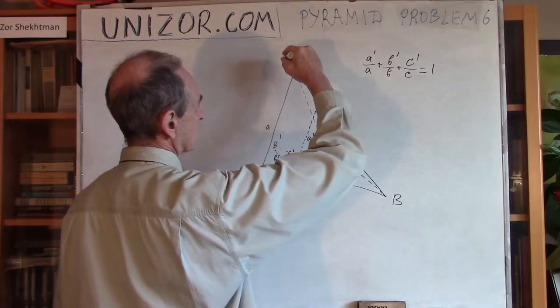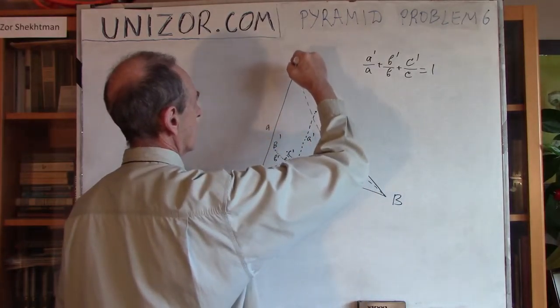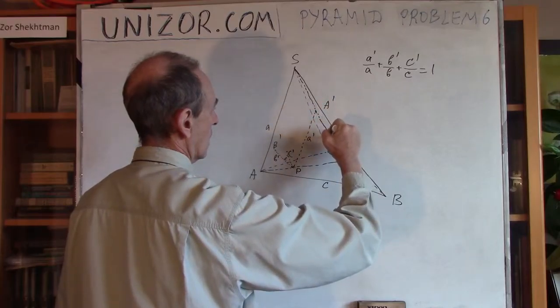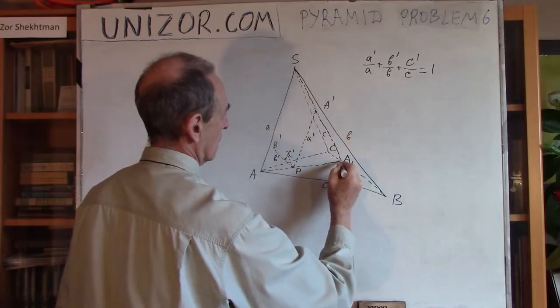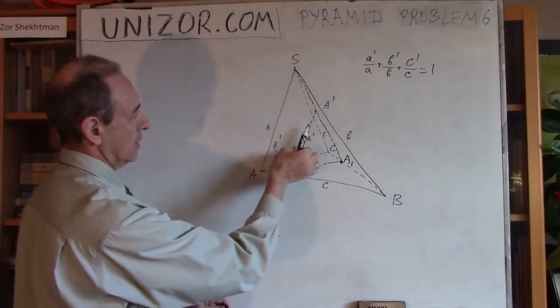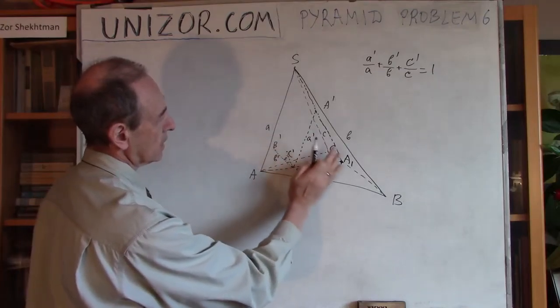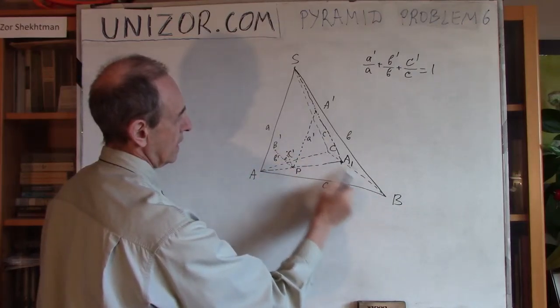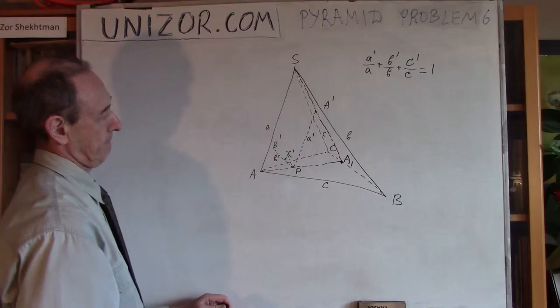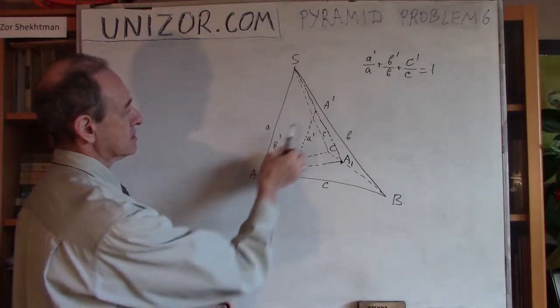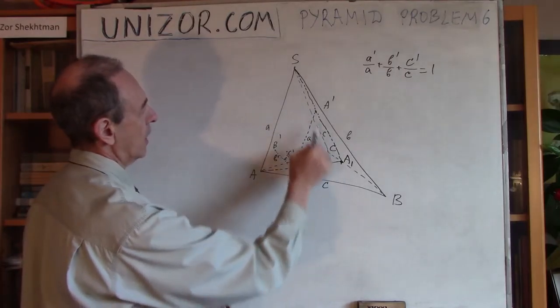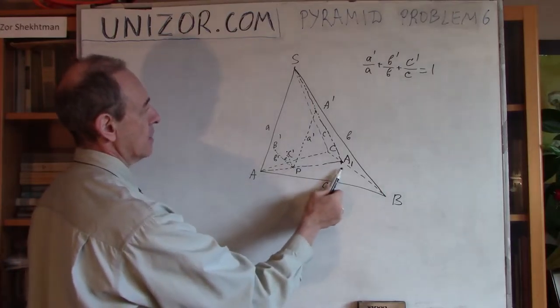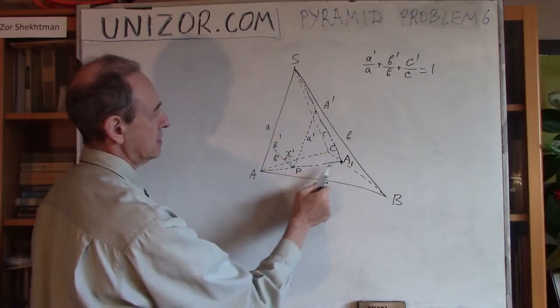And it will cut the opposite face SBC through some line. This is a plane which goes through parallel lines PA prime and SA, and it cuts through the pyramid two faces, and goes into point A1 on the edge from B to C. Now, since these two are parallel, and AA1S is a plane, obviously, we have similarity between triangles SAA1 and PA1A prime.